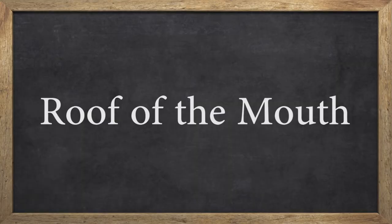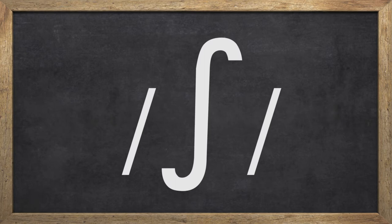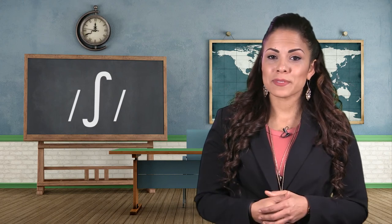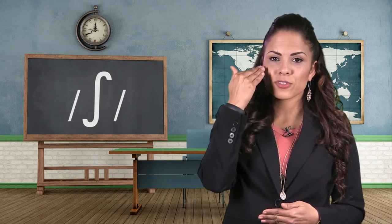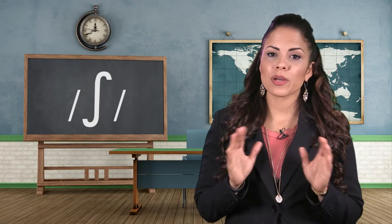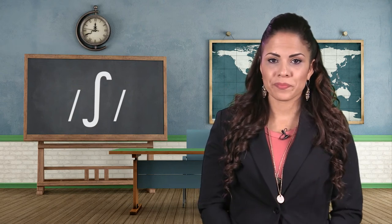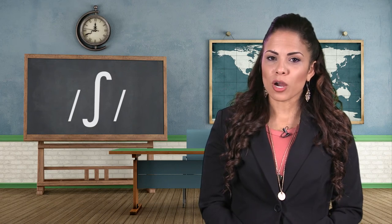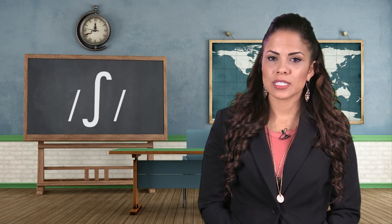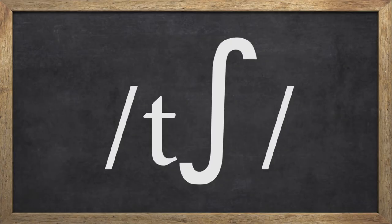The next group of consonant sounds are produced by bringing your tongue closer to the hard palate, also called the roof of the mouth. The first sound is /ʃ/, and it sounds like when you are telling someone to be quiet. You will pucker your lips, bring the body of your tongue closer to the roof of your mouth but not actually touch it, and blow air. Your vocal folds will not vibrate. Listen in the words: sharp, chef, washer, tissue, social, and dish.